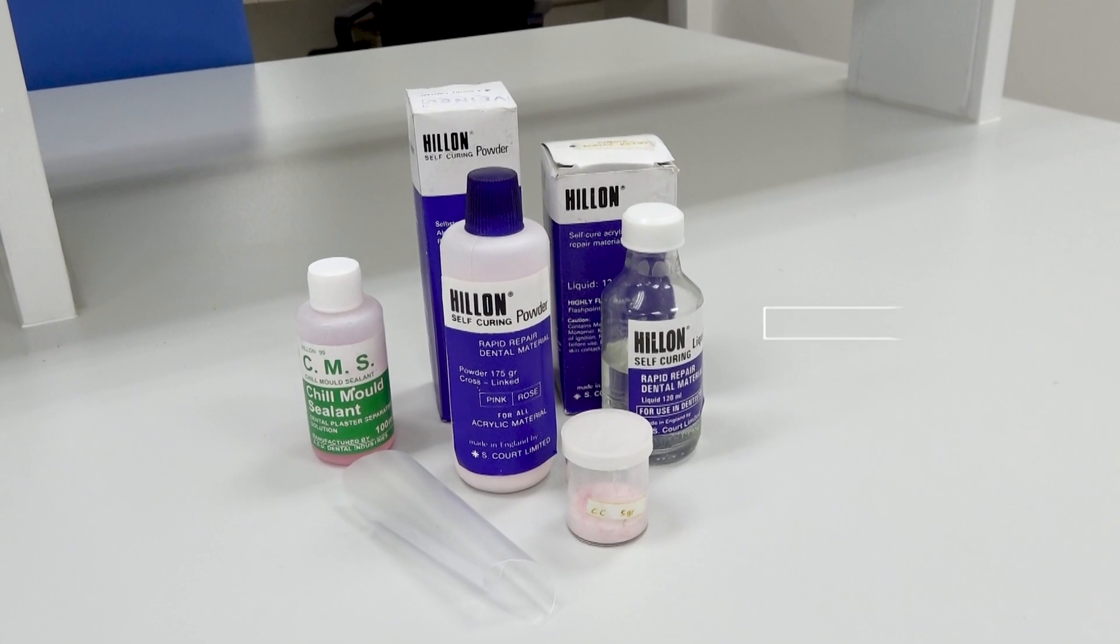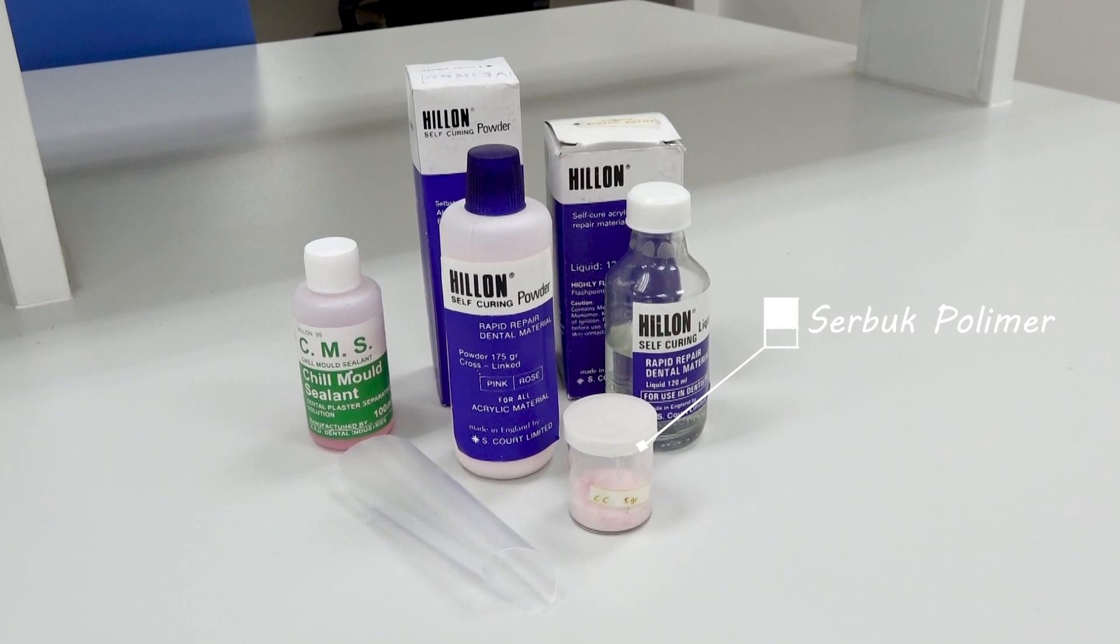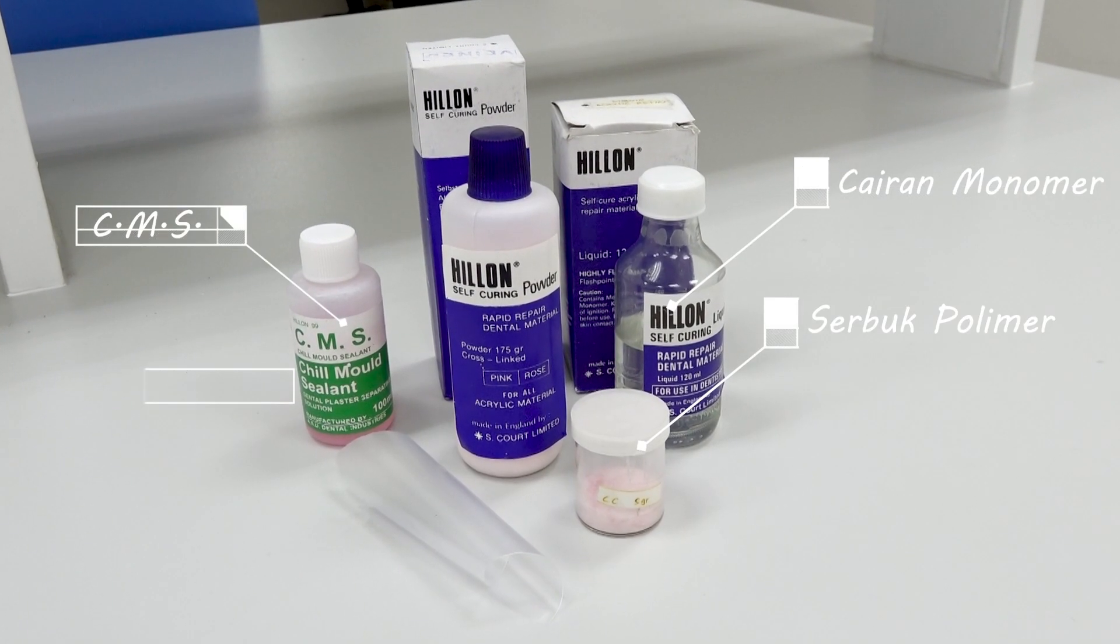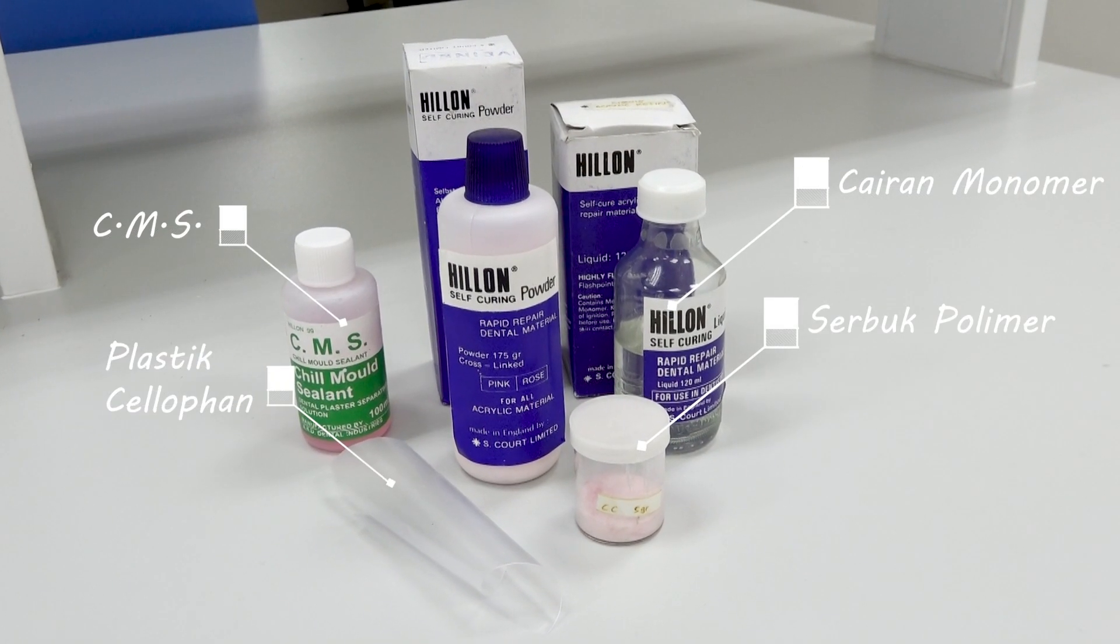Proper manipulation will produce the desired acrylic resin, which is acrylic resin without pores. In this video, we will learn the manipulation process for chemically-polymerized acrylic resin. Materials used include polymer powder, monomer liquid, CMS, and cellophane plastic.